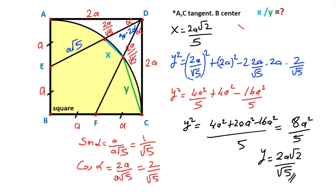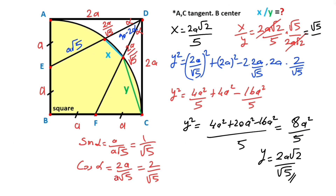Therefore, the ratio of X and Y is: X/Y = (2A√2/5) times (√5/(2A√2)), which simplifies to X/Y = √5/5. Thanks for watching. If you want more videos like this, please don't forget to like and subscribe to my channel. Take care and bye.